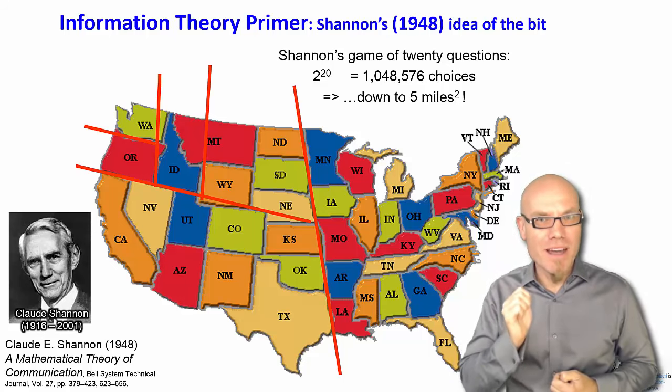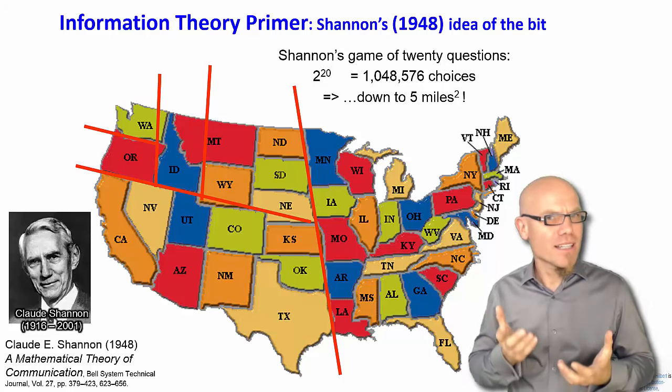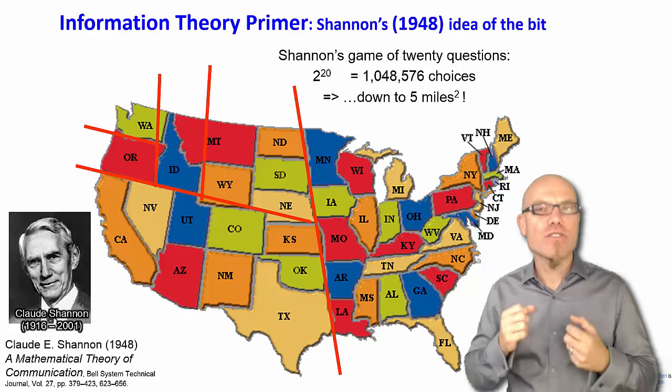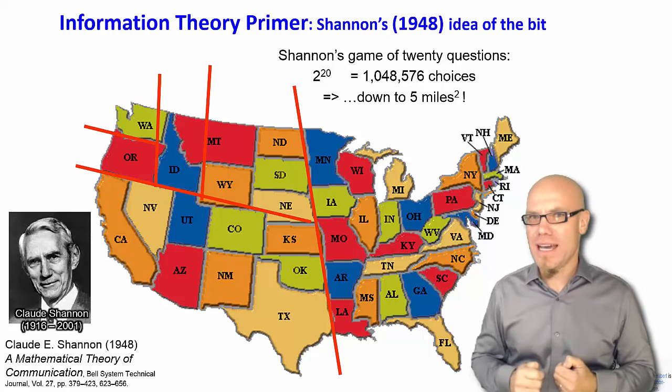A bit reduces uncertainty by half. That's basically what a bit is. It is that that reduces uncertainty by half.